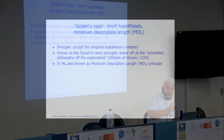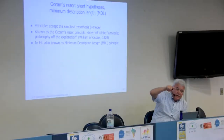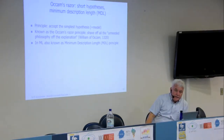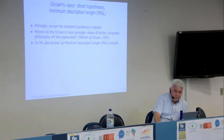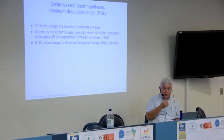Occam's Razor is a principle widely used in machine learning. It says: use and accept the simplest hypothesis or model you could imagine. For example, if you have data described by a linear model, don't build a neural network — there is no need. Leave it linear; use the simplest possible model. William of Occam was a monk in England in 1320 who formulated the principle: shave off all the unneeded philosophy of the explanation. If you can explain things in simple terms, don't go further. It's also formulated as the KISS principle: Keep It Simple.